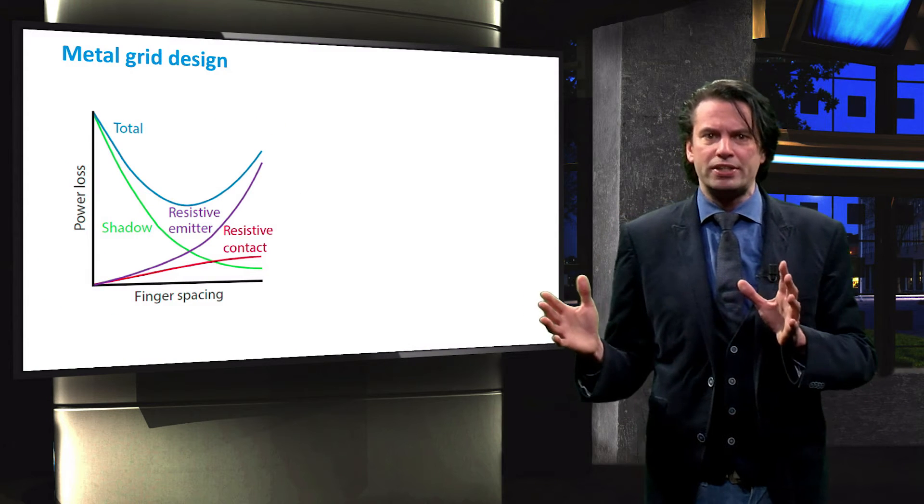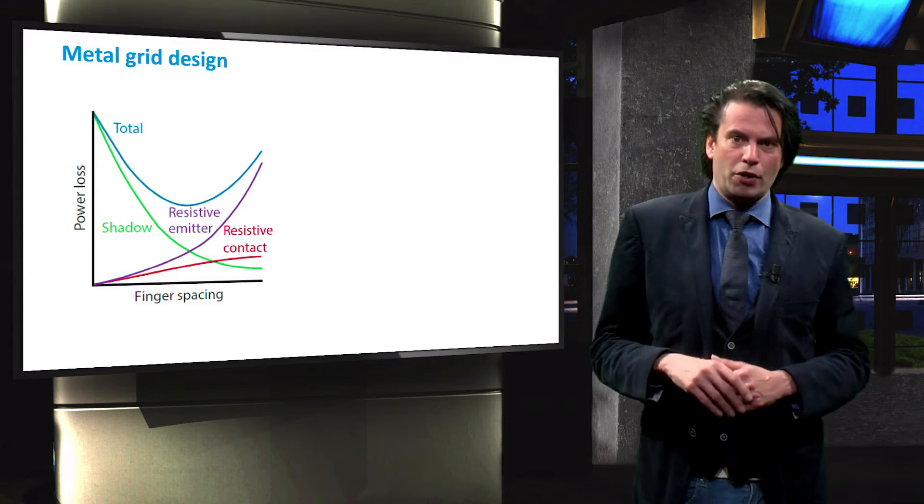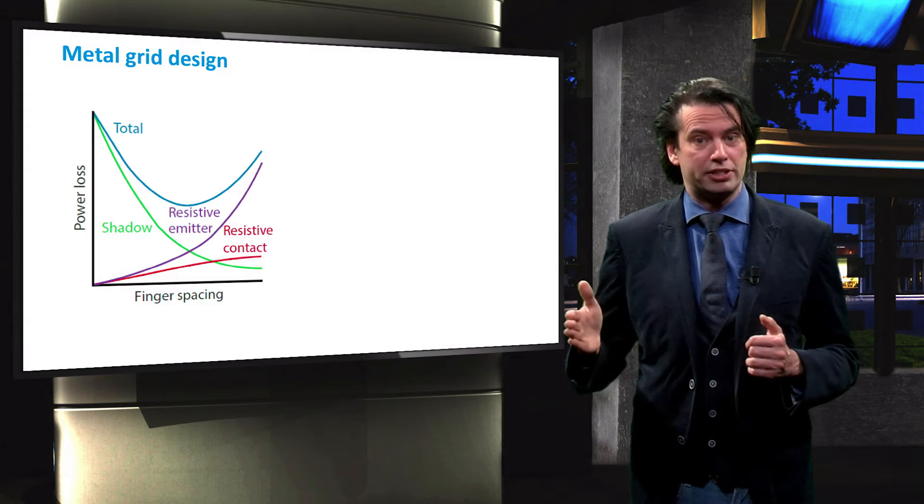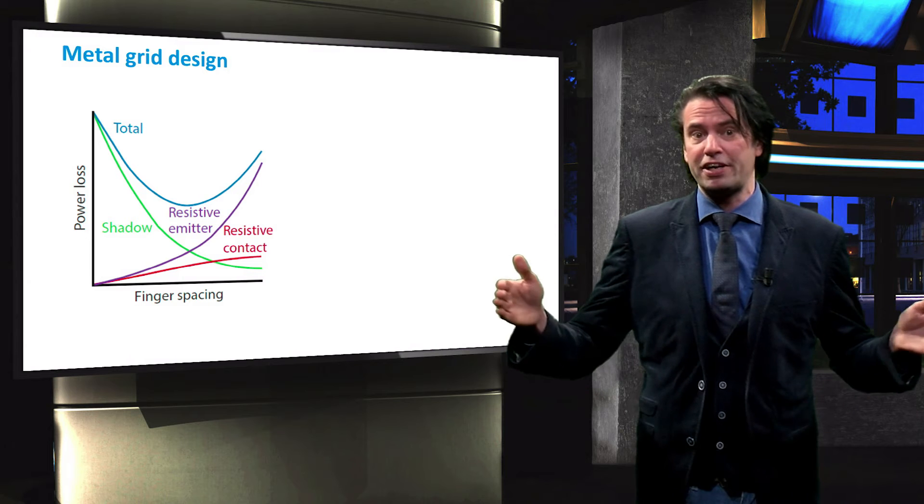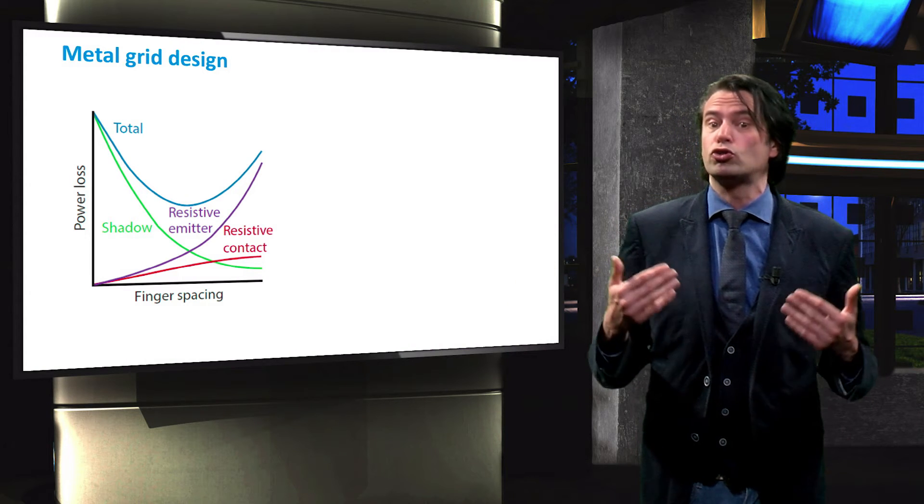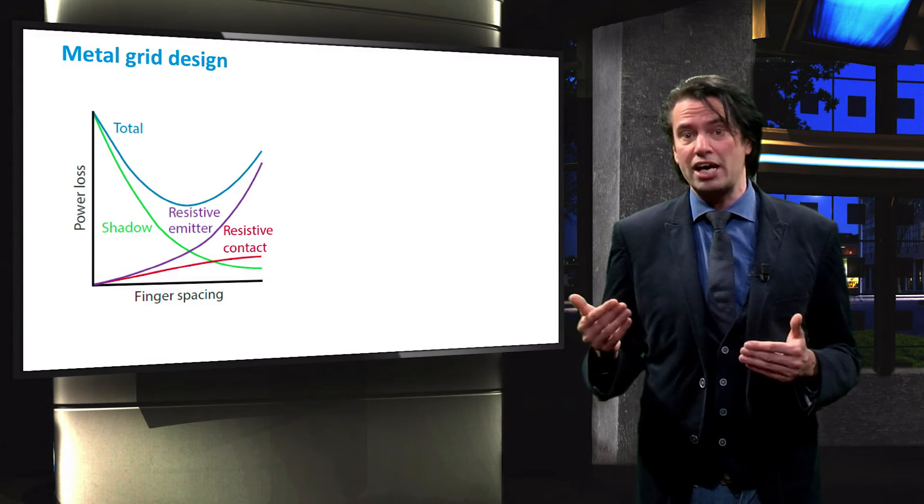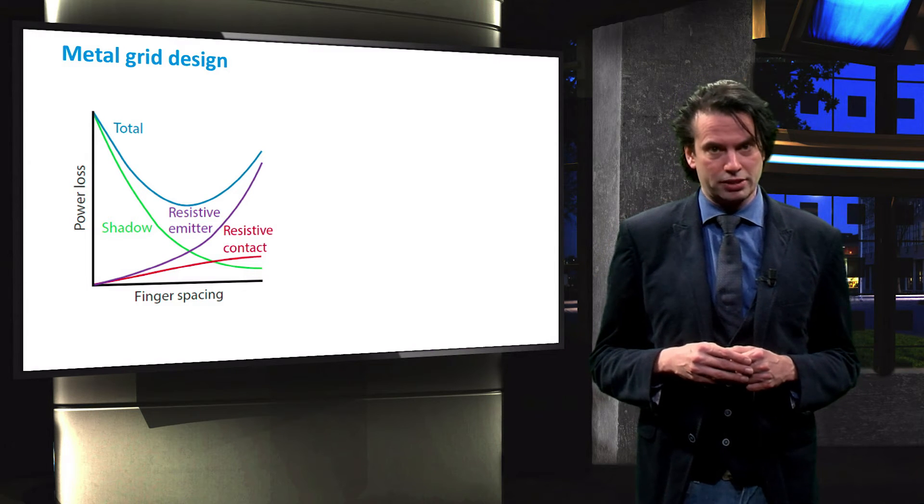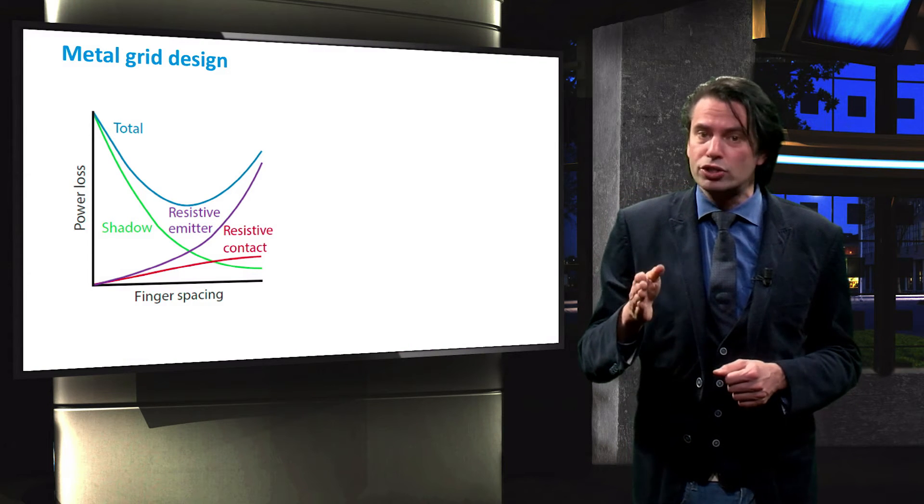This trade-off between the resistance of the fingers and the shading of the fingers is shown in this graph, where the power loss of the solar cell is plotted against the finger spacing. We can see several competing effects. With increasing finger spacing, the power losses of the solar cell decrease because of less shading. The power losses increase, on the other hand, due to the increased resistance in the emitter layer and contacts. Hence, there is an optimal spacing distance at which the power loss is minimal.